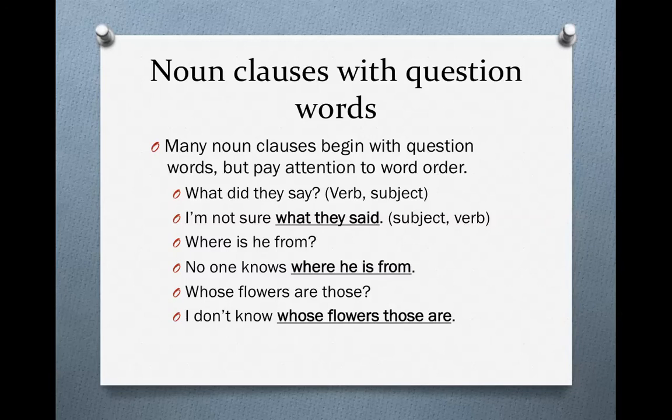Another example: 'Where is he from?' becomes 'No one knows where he is from.' Again, you see the difference — 'Where is he from?' has verb then subject. But in the noun clause, 'No one knows where he is from' — subject, then verb. 'Whose flowers are those?' has verb then subject: 'are those.' In the noun clause, 'I don't know whose flowers those are' — subject, verb: 'those are.'